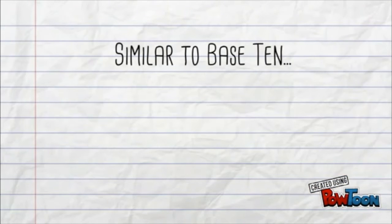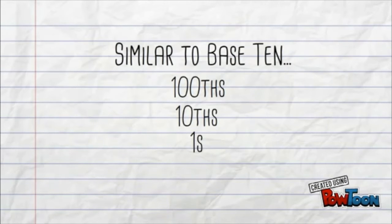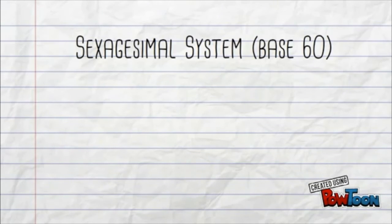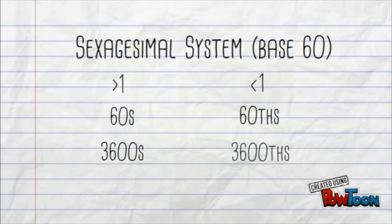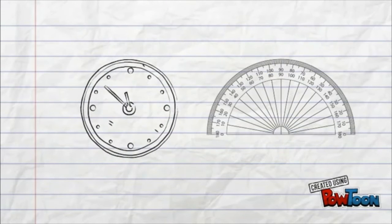The sexagesimal system was similar to our current base 10 system consisting of place values like hundredths, tenths, ones, tens, hundreds, and so on, except their system had 60 as a base. Numbers that were greater than 1 had place value of 60s, 3600s, and so on. Numbers lower than 1 had place value of 60ths, 3600s, and so on. We use this system today for hours and angles.